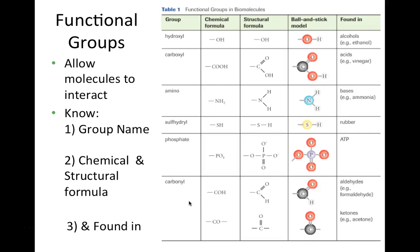This chart is going to be an important study feature. It may help to rewrite it in your own words or create it in some format you can use to study. Learn the names of the groups in the first column, the chemical and structural formulas in columns two and three, and where each is found in the last column. The ball-and-stick model next to the structural formula shows the same functional groups — it just fills out the shape and size of the atoms.